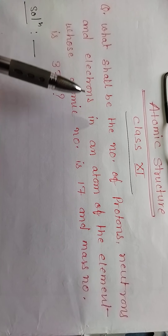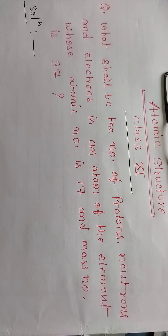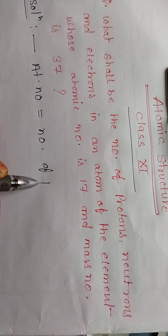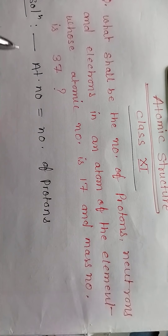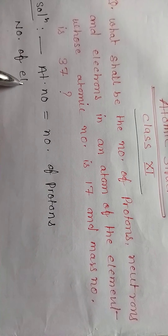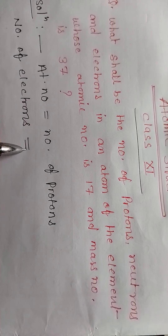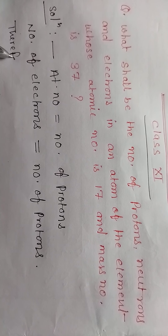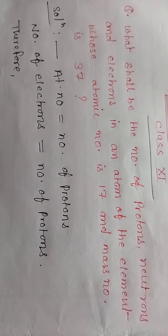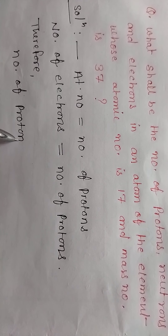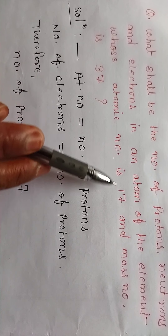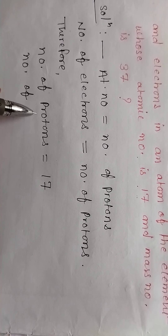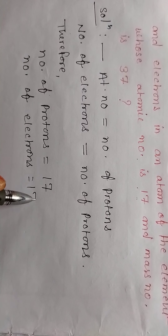What do you need to find out? The number of protons, neutrons, and electrons. Atomic number is equal to number of protons. Therefore, number of protons is equal to 17, since the atomic number is 17.